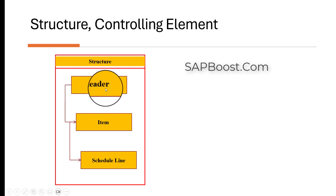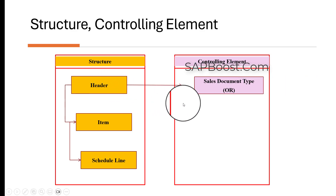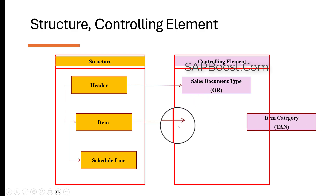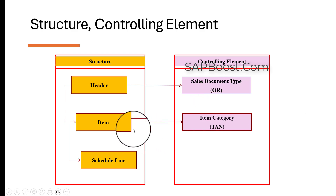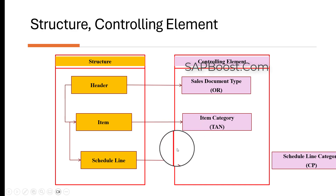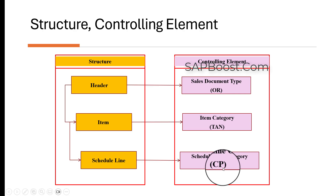The header level of the sales document is controlled by the sales document type, for example OR. The item level data is controlled by the item category, for example TAN. The schedule line data is controlled by the schedule line category, for example CP.